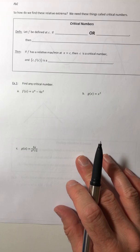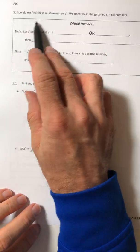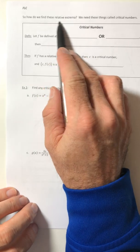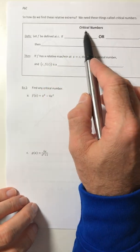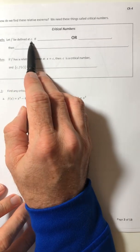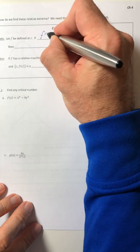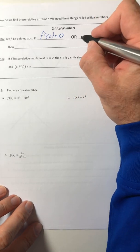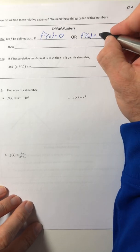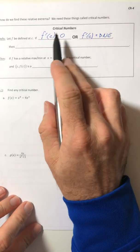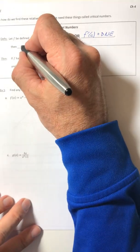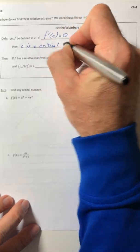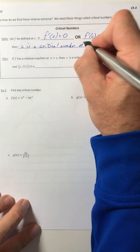And the last thing of vocabulary is going to be associated with these relative extrema because that's the stuff that's a bit more readily found than the absolute. So how do you find them? We need these things called critical numbers. So let F be defined at C. So if F prime of C is equal to zero or F prime of C does not exist, it's undefined. So if either of those two cases happen, then C is a critical number of F.